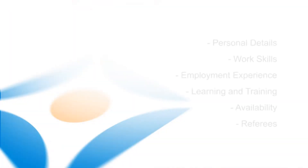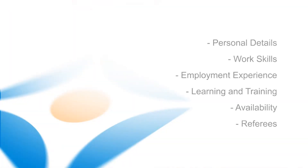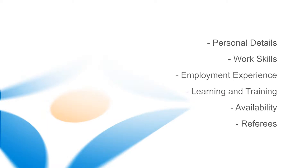The six subheadings that you'll have in your resume are as follows: personal details, work skills, employment experience, learning and training, availability, and referees. I'm going to go through each of these subheadings and give you a full explanation as to what they each mean.